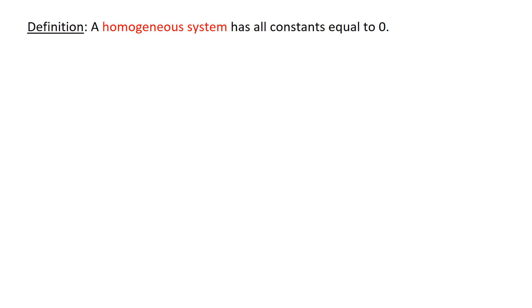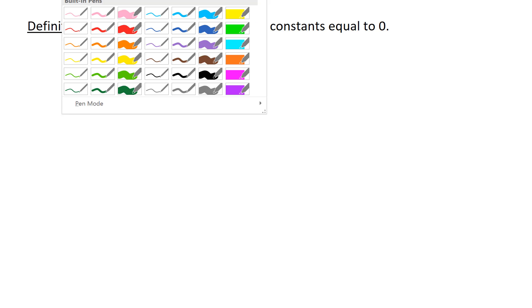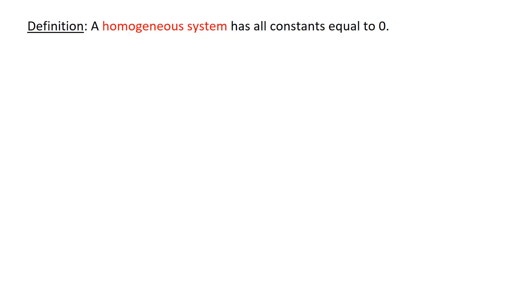The next term we'll define is a homogeneous system. A homogeneous system has all constants equal to 0. Let's take a look at an example.